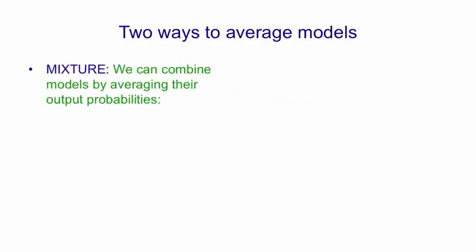I want to start by describing two different ways of combining the outputs of multiple models. In a mixture, we combine models by averaging their output probabilities. So if model A assigns probabilities of 0.3, 0.2, and 0.5 to three different answers, and model B assigns probabilities of 0.1, 0.8, and 0.1, the combined model simply assigns the averages of those probabilities.